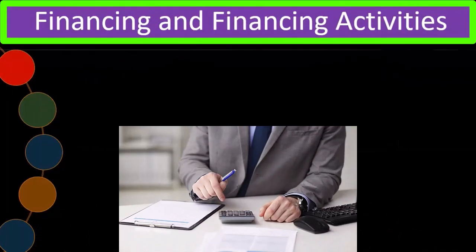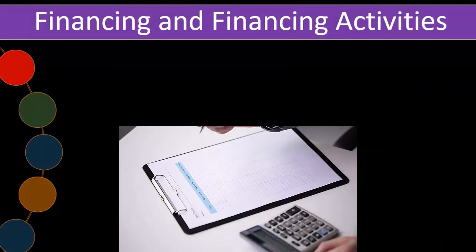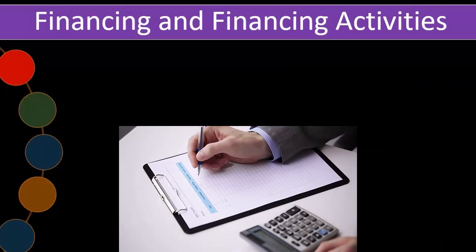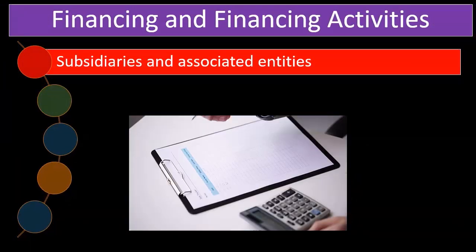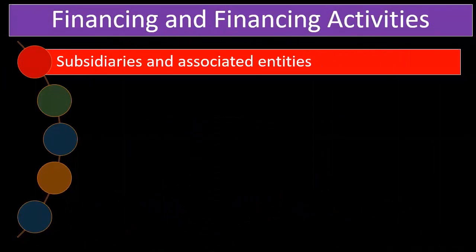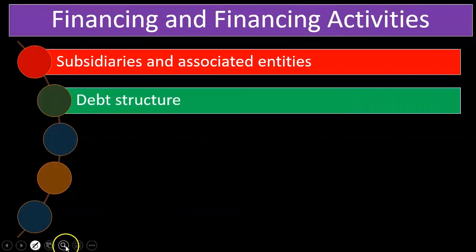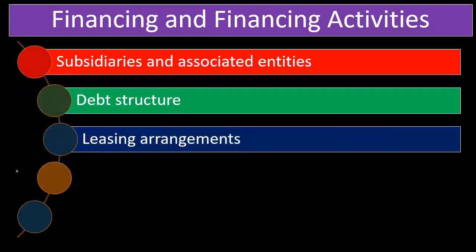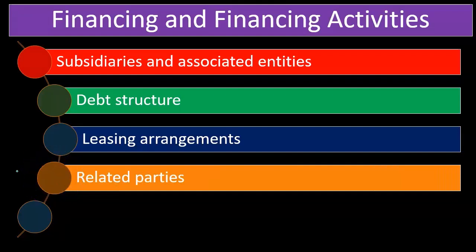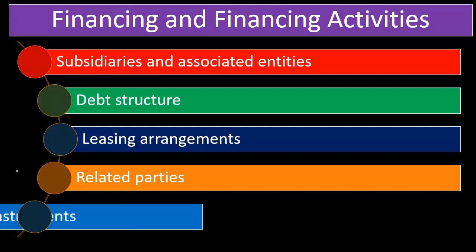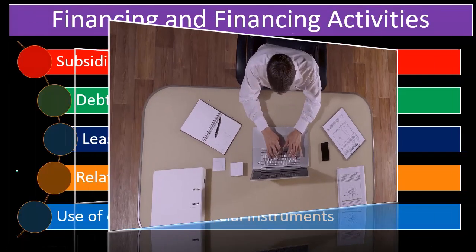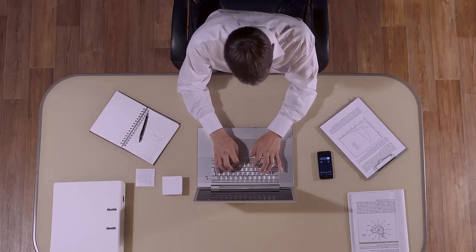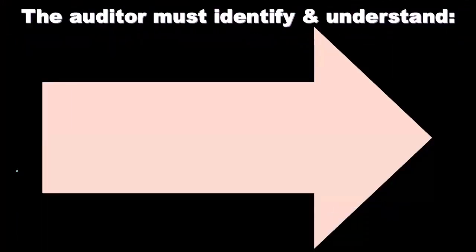Financing and financing activities — we're trying to understand what kind of financing the business has in order to push forward with their operations. We want to know if there are any subsidiaries and associated entities involved in their financing structure, what kind of debt structure they have, leasing arrangements, and any related parties, which can be a significant factor. We also look at the use of derivative financial instruments, as that can add complexity requiring specialization to fully understand.